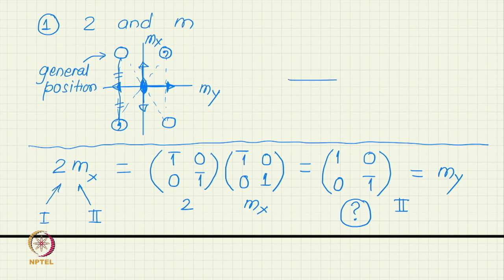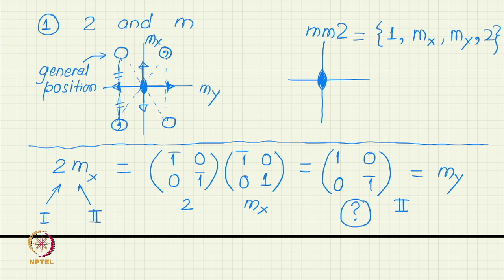We have a group. We have a 2 dimensional group in which there are 3 operations. In fact, 4 operations because identity is always an operation. My group consists of identity, an x mirror, a y mirror, and a 2 fold. 4 operations are there. It forms a group and this group we give a name and that is mm2. x mirror and y mirror both we denote in the symbol as m and m and a 2 fold.